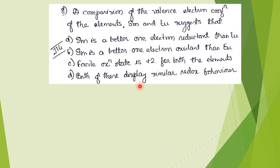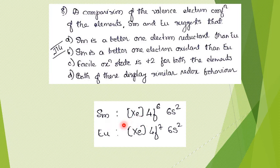Final question: comparing valence electronic configurations of samarium and europium regarding redox behavior. Valence configurations are written for Sm and Eu. Options C and D can be eliminated: option C incorrectly states that +2 is the sole oxidation state for both — +2 is a feasible oxidation state for Eu but not for Sm, where +3 is more common. Option D claiming similar redox behavior is also wrong.